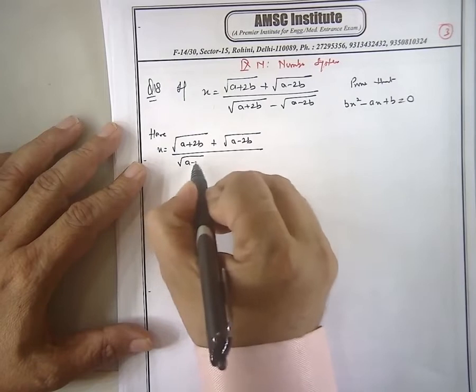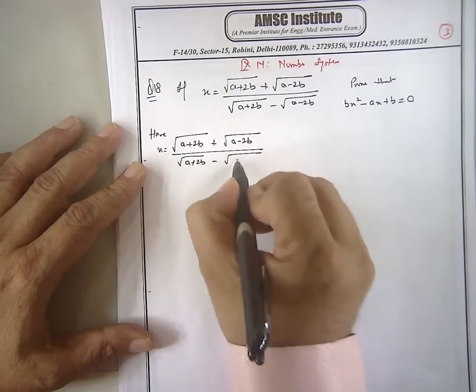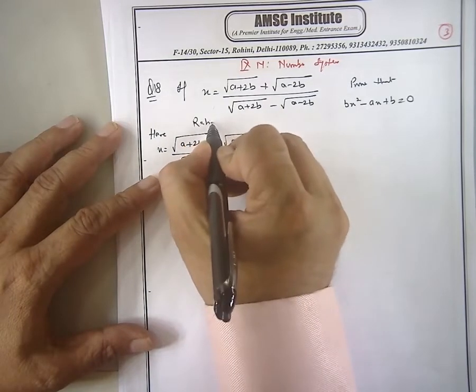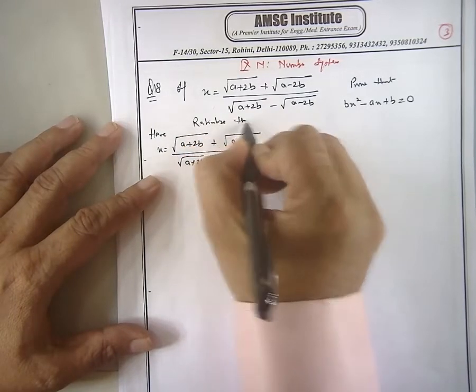I'm going to rationalize the denominator, turning it into this minus I'm telling it.